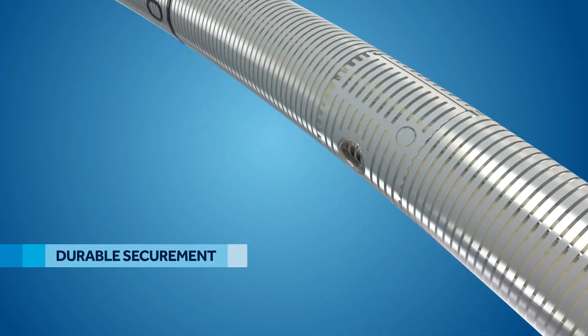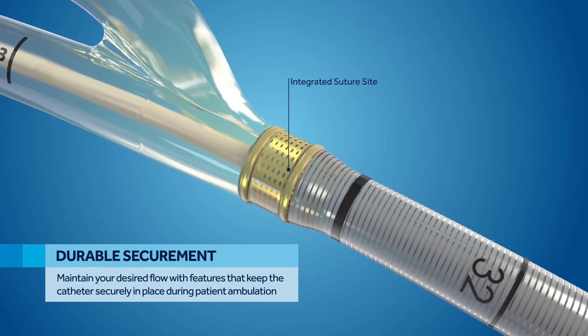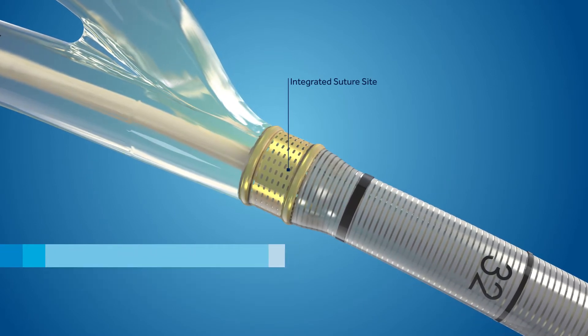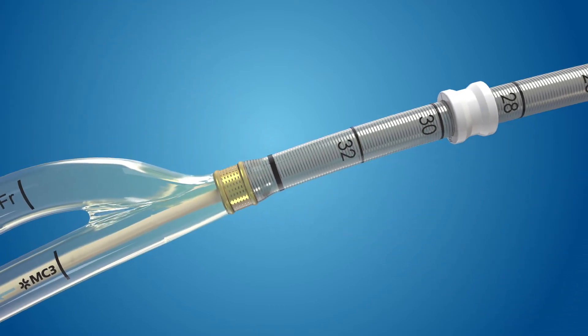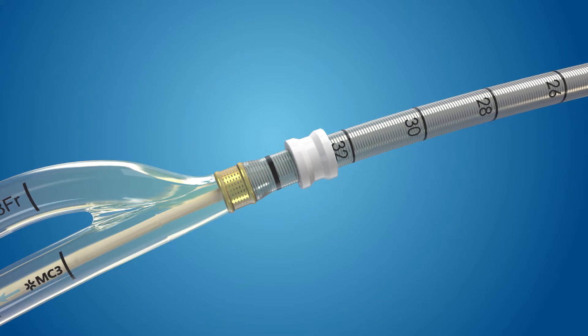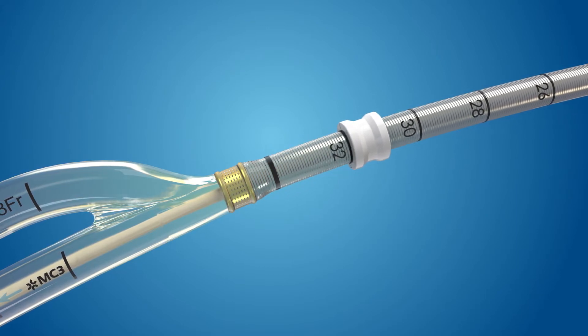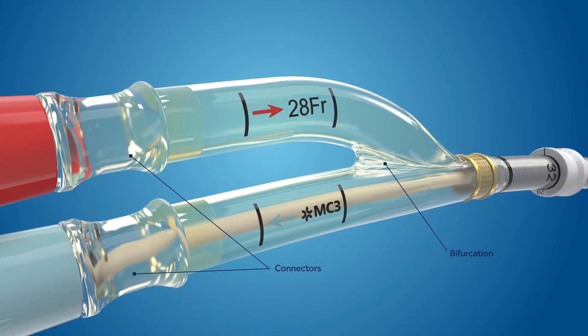Durable securement is achieved by suturing directly on the Gold Integrated Suture Site, which contains special reinforcement to protect against catheter damage. An optional suture collar can be placed at a desired location on the catheter body before or after insertion. Sutures can also be used around the bifurcation or on the connectors as needed.